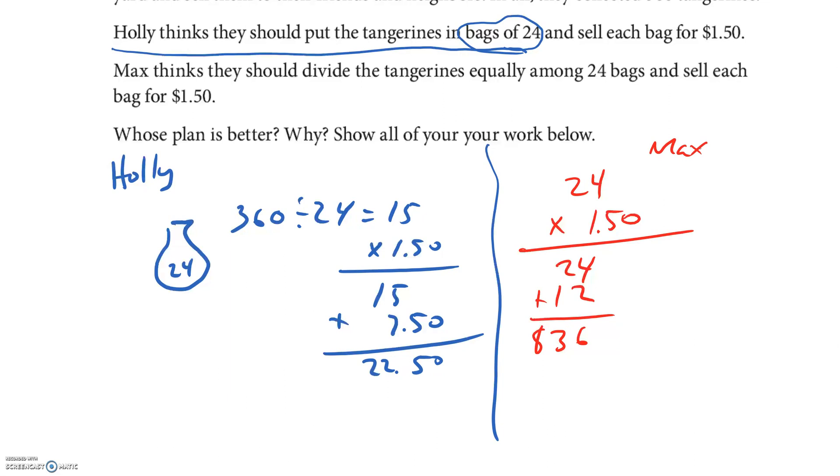So whose plan is better? Well I think Max is right because Max is going to make $36 compared to $22.50, so Max is going to be a better deal. Okay guys, I hope you tried some of these on your own. I did not stop you and tell you to try some, so hopefully you did. Make sure you bring any questions for me. All right, take care you guys.